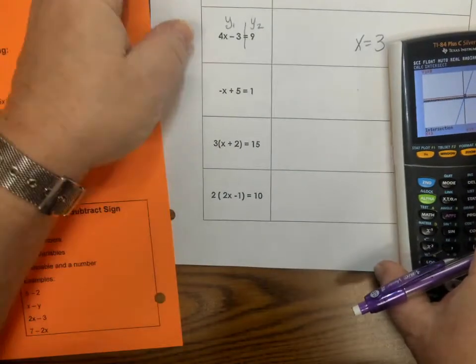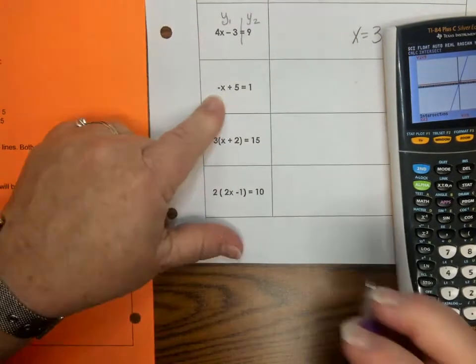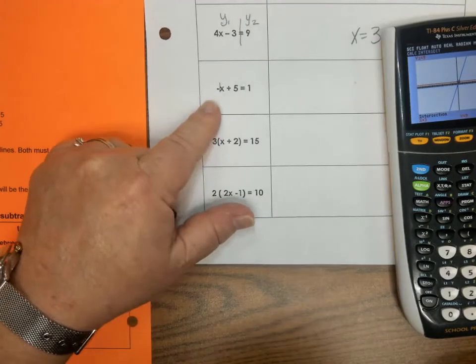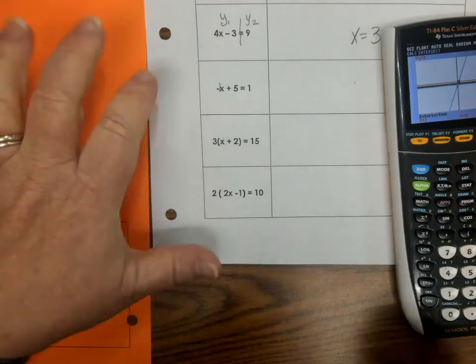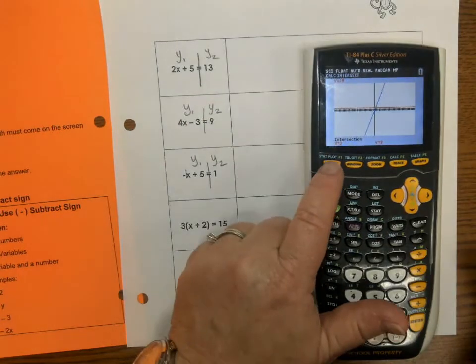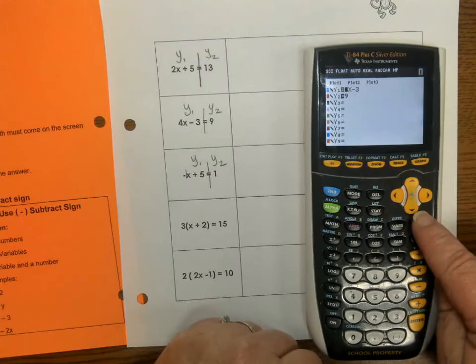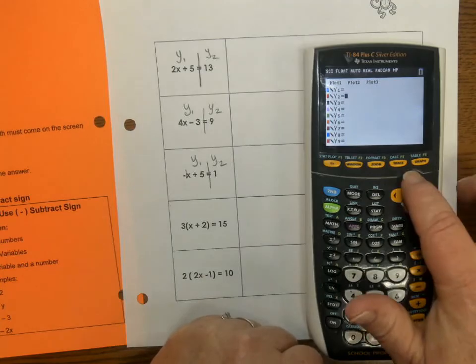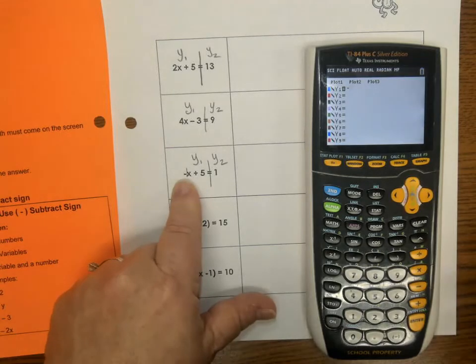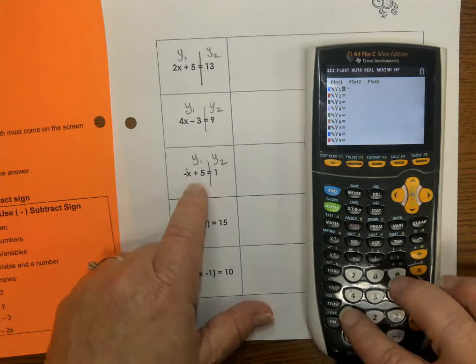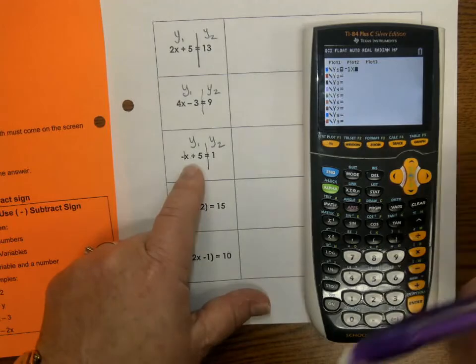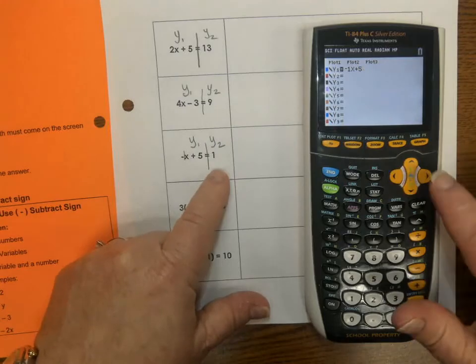Next. It says we have a negative X. Now, that is called an invisible 1. The invisible 1. When you don't have a number in front of a variable, it means it's a 1. So, we're just going to split our equation like this. We're going to go back to Y equals. And we're going to clear Y1. Go down. Clear Y2. Go back up. We're going to put in negative. Now, if you want to put the 1, you can. If you don't put the 1, it'll still work. 1, X. And you saw that I used the negative key. That's out front. I have to use the negative key. Plus. 5. Go down to Y2. And I'm going to enter 1.